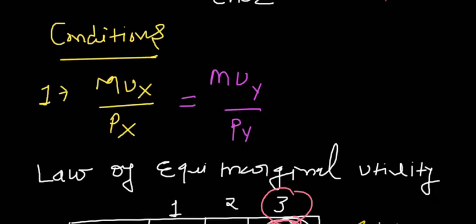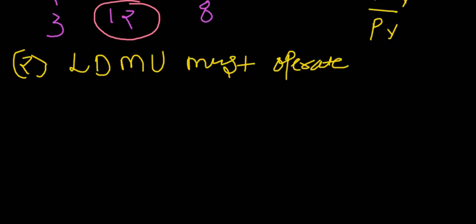The first condition of consumer equilibrium in the more-than-one-commodity case is that MUx/Px must equal MUy/Py. The second condition is that the law of diminishing marginal utility must operate — as consumption increases, the marginal utility derived from each additional unit is bound to decline.